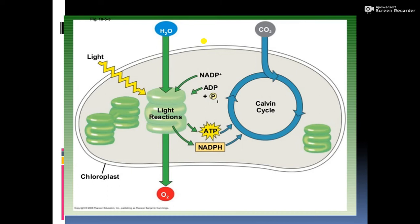Here you can see the total process: in the chloroplast, light energy initiates the light reaction, producing NADPH and ATP and releasing oxygen. ATP and NADPH then fuel the Calvin cycle. Carbon dioxide enters through the stomata, and after a series of reactions in the stroma, carbohydrate is produced.